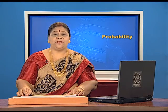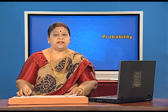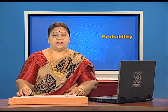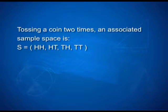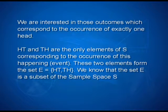To begin with, let us study what is an event. We have studied about random experiment and sample space associated with an experiment. The sample space serves as a universal set for all questions concerned with the experiment. Consider the experiment of tossing a coin two times. An associated sample space is S = {HH, HT, TH, TT}. Now suppose we are interested in outcomes which correspond to the occurrence of exactly one head. We find that HT and TH are the only elements of S corresponding to this event. These two elements form the set E = {HT, TH}, which is a subset of the sample space S.